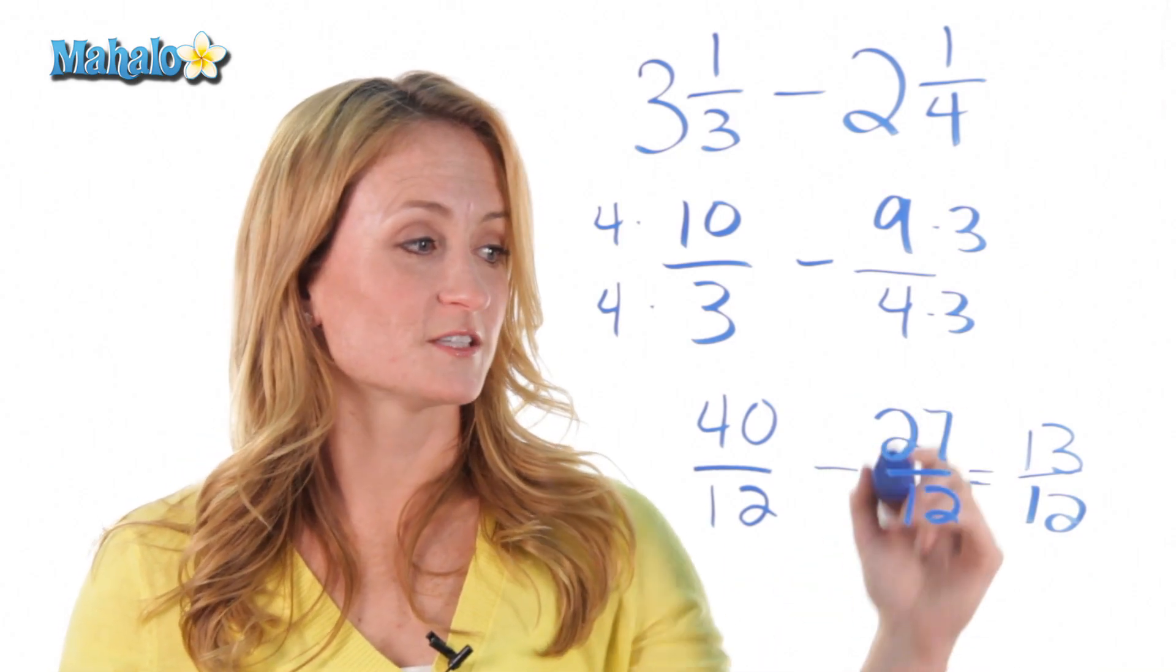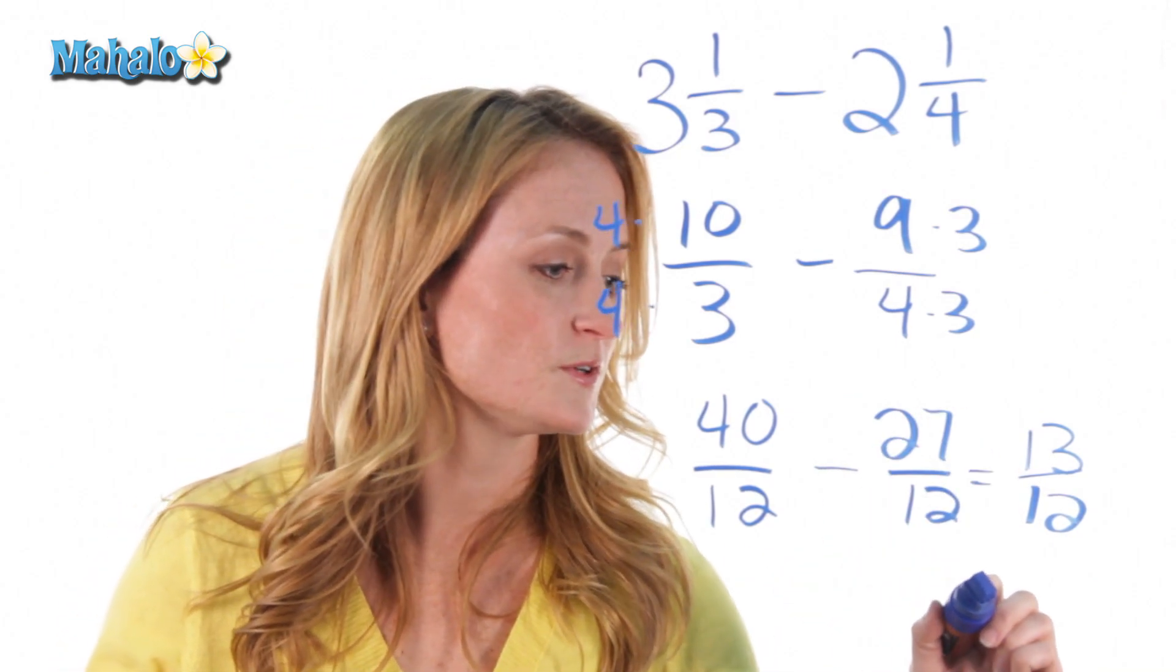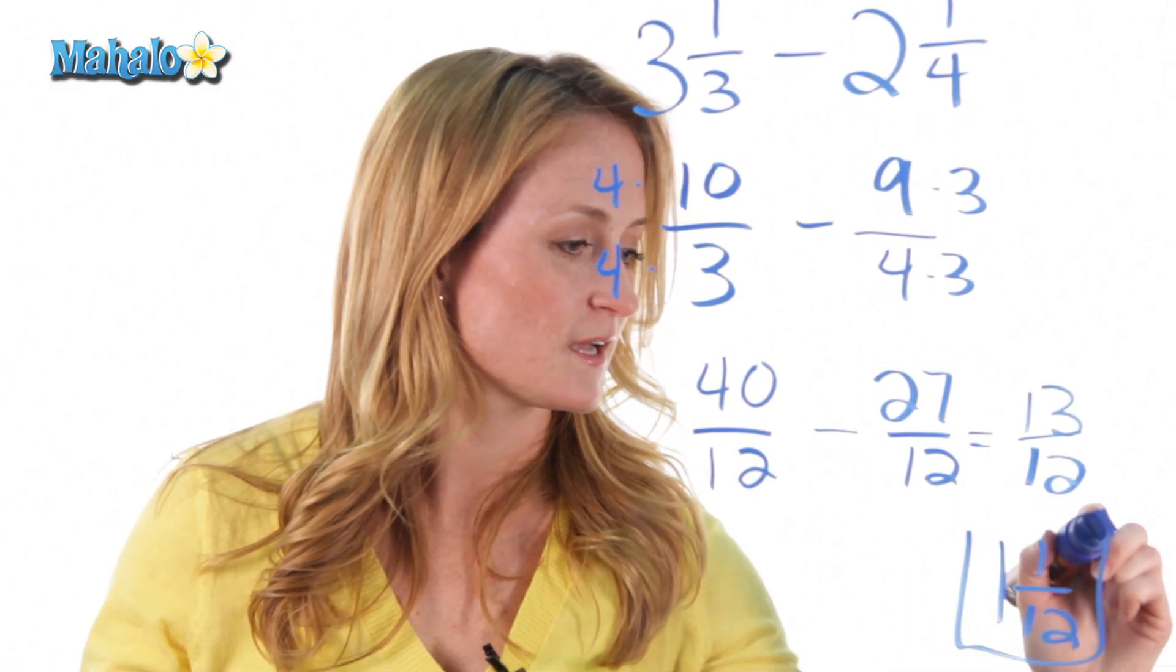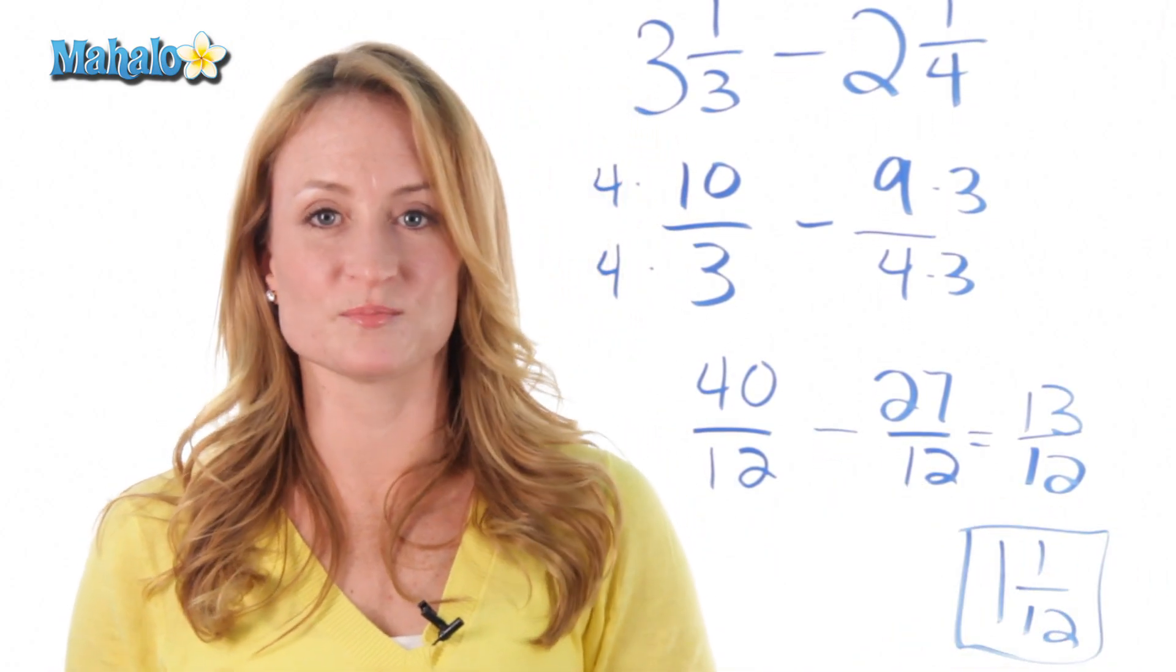And we also know how to turn a fraction into a mixed number. So, this 13 would reduce to 1 and 1 over 12. And that's how you add or subtract mixed numbers.